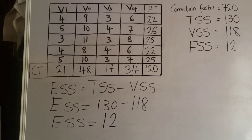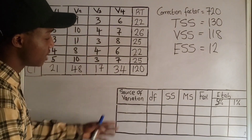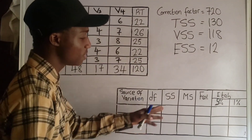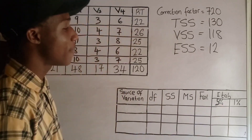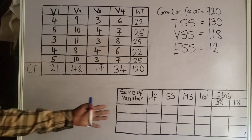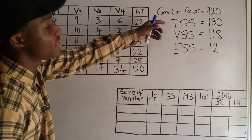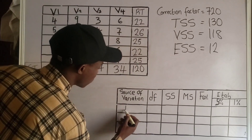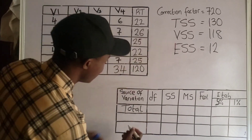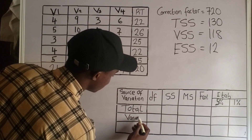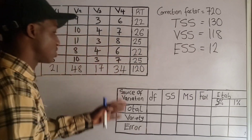Now we proceed to compute the ANOVA table. A typical ANOVA table has the following columns: source of variation, degree of freedom, sum of squares, mean square, F calculated, and F tabulated at 5% and 1%. The sources of variation are: total, variety, and error.